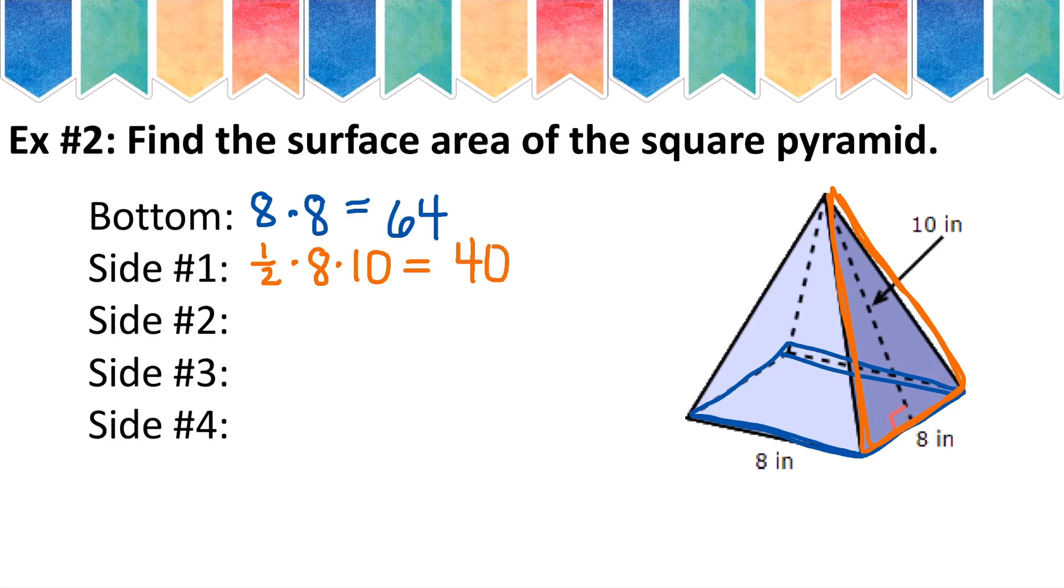Now the cool thing, when our base is a square, so this side is 8 and this side is also 8, what that means is that all four triangular sides are going to be the same. So all of them are going to be 40.